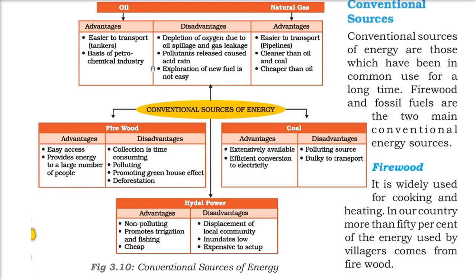Firewood is a conventional source of energy. Its advantages are that it is easily accessible and provides energy to a large number of people — more than 50% in our country. The disadvantages are that collection takes a long time, it is polluting because smoke and ash come out, and it promotes the greenhouse effect, increasing the temperature of the earth. Cutting trees for firewood also causes deforestation, which is again harmful for us.